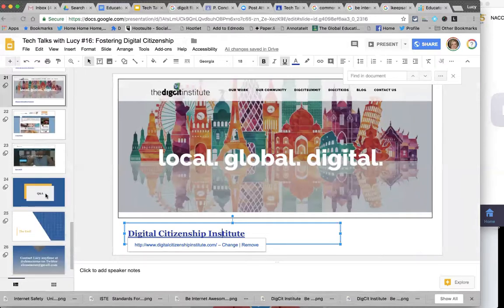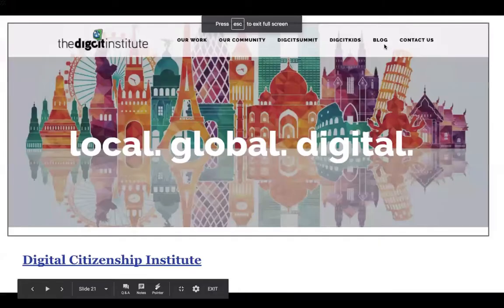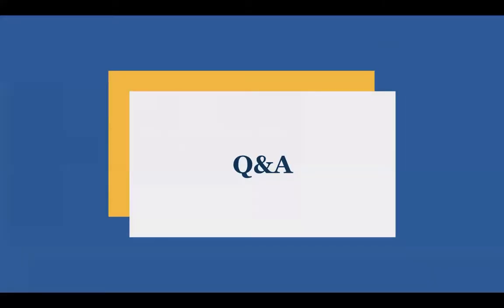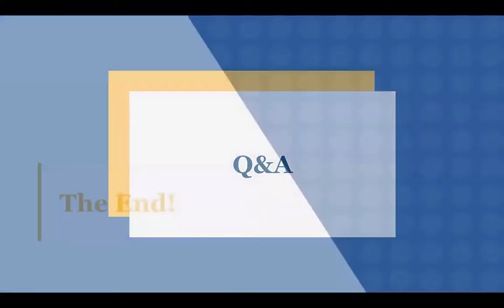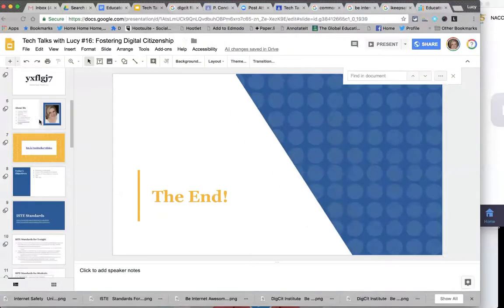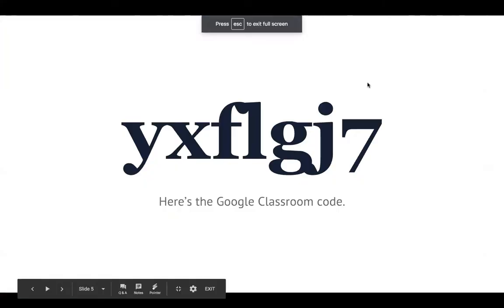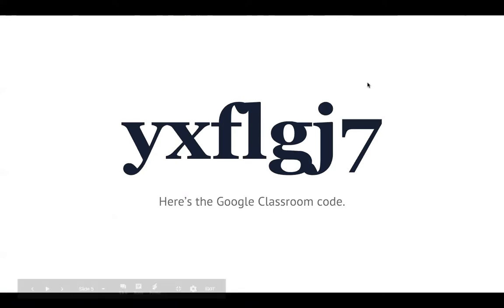This is the end of our series. Everything will continue to be in our Google Classroom — go to classroom.google.com and enter the code we showed at the beginning of the webinar. I can bring it up one more time if you'd like. This is the code and you will see everything that we've covered over the course of this webinar series.